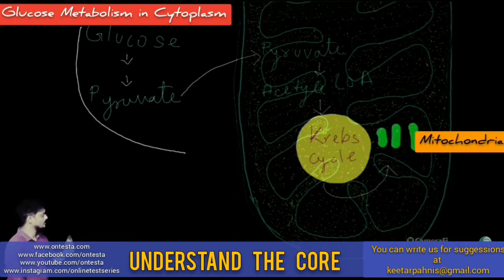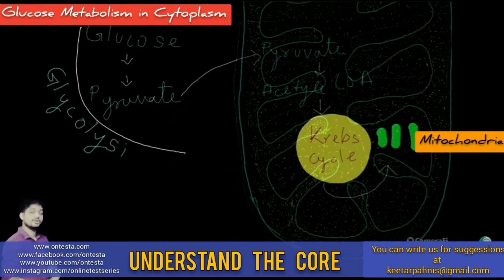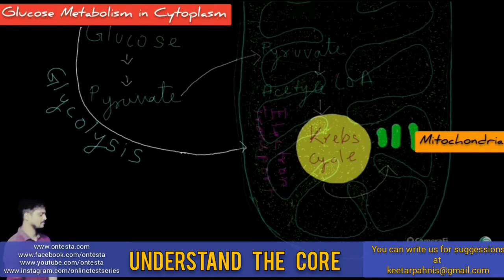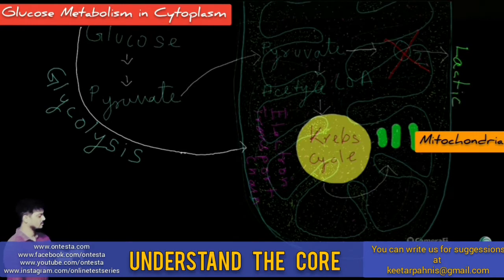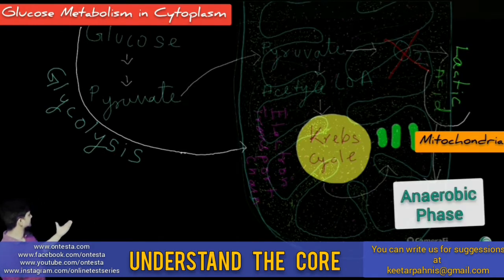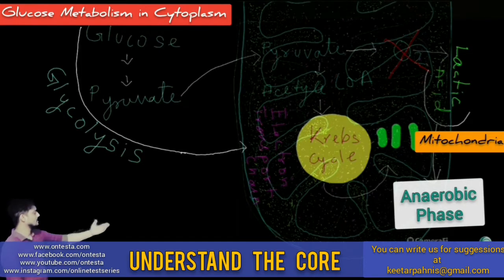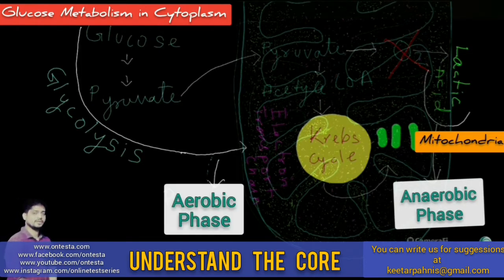After the whole process of glycolysis, an electron transport chain runs in the mitochondrial membrane. If there is absence of oxygen, then the pyruvic acid is converted into lactic acid, like in the muscles. This phase is called the anaerobic phase, while the other one due to the presence of oxygen is called the aerobic phase.